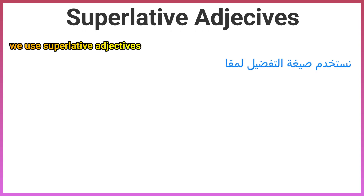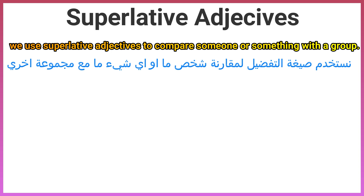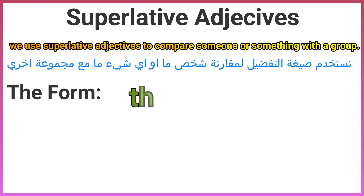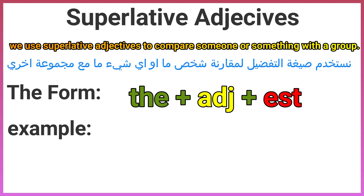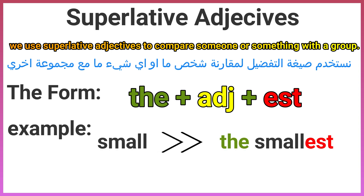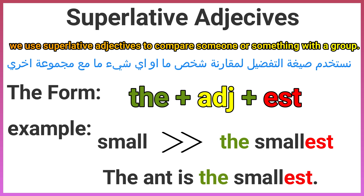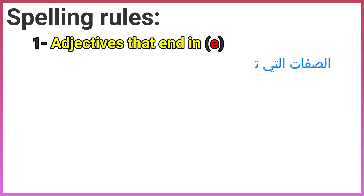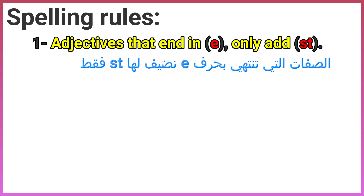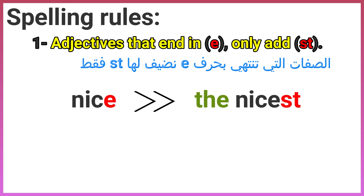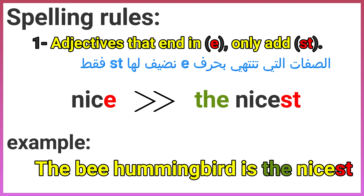Superlative adjectives: we use superlative adjectives to compare someone or something with a group. The form is: the + adjective + est. For example: small → the smallest. Example sentence: the ant is the smallest. Spelling rule one: adjectives that end in e — only add st. For example: nice → the nicest. Example: the hummingbird is the nicest.